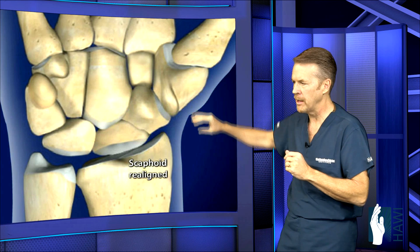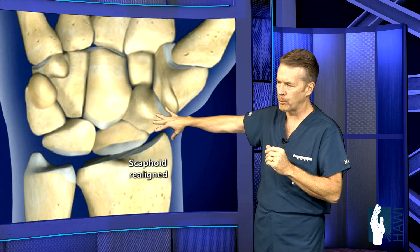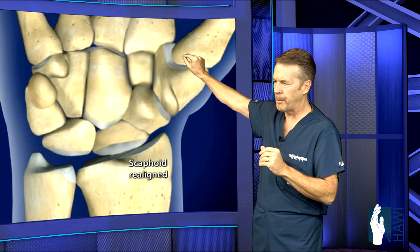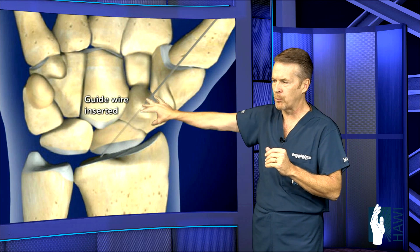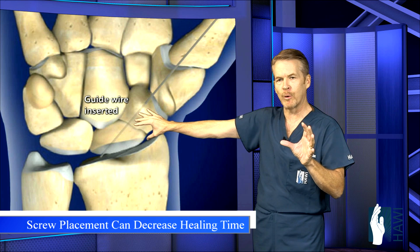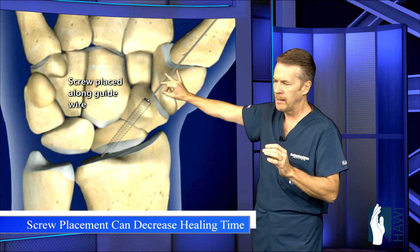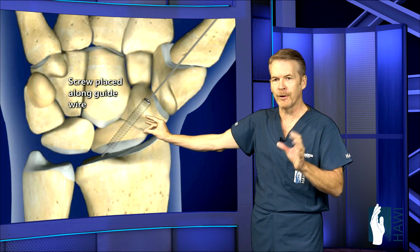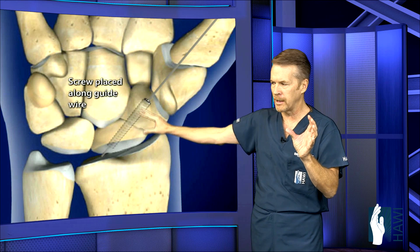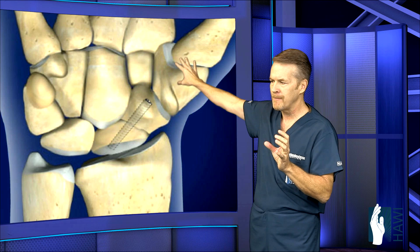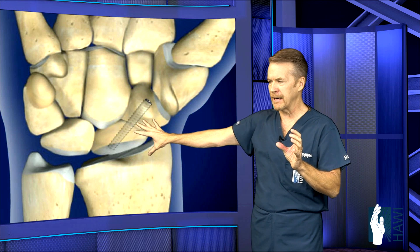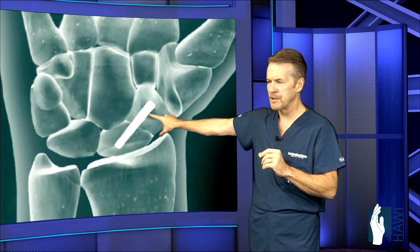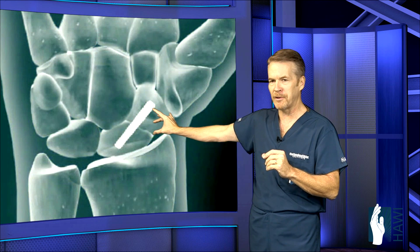So let's look at the process. We first realign the fracture, getting it back in its normal place. Then through a little puncture mark in the skin, we put this guide wire in. Then over that guide wire, we run this little screw in. It's a compression screw that forces these two pieces together, which is optimal for fracture healing. Then we take the wire out. Now we're going to see an x-ray or animated image of what this looks like — this cool picture showing that screw in place, compressing the fracture.